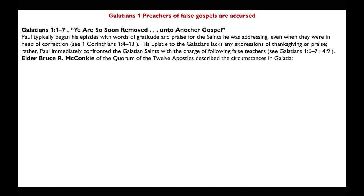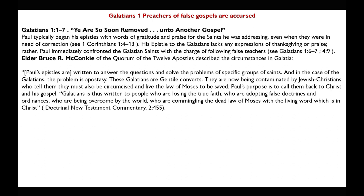Elder Bruce R. McConkie of the Quorum of the Twelve Apostles describes the circumstances in Galatia: 'Paul's epistles are written to answer the question and solve the problem of a specific group of saints. In the case of the Galatians, the problem is apostasy. These Galatians are Gentile converts now being contaminated by Jewish Christians who tell them they must also be circumcised and live the law of Moses to be saved. Paul's purpose is to call them back to Christ and his gospel. The Galatians is thus written to people who are losing the true faith, adopting false doctrines and ordinances, and commingling the dead law of Moses with the living word which is in Christ.'